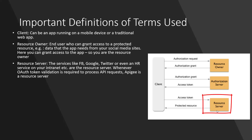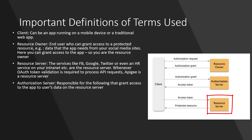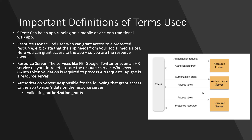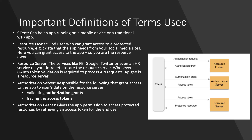A resource server is a service like Facebook, Google, Twitter, or even an HR service on your intranet in your organization. Whenever OAuth token validation is required to process an API request, Apigee X from Google Cloud acts as a resource server. The authorization server is responsible for granting access to the app to users' data on the resource server.